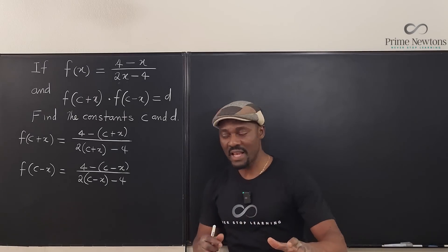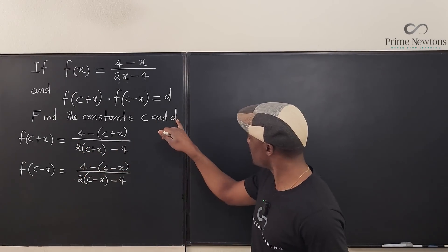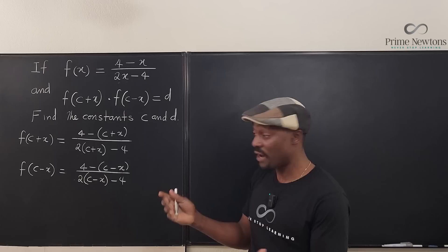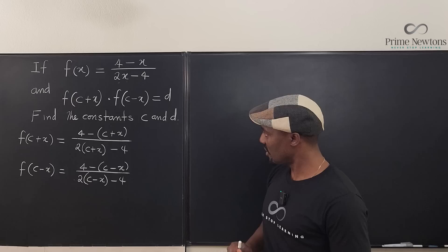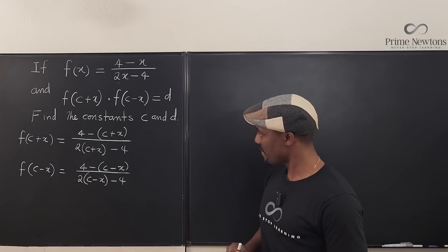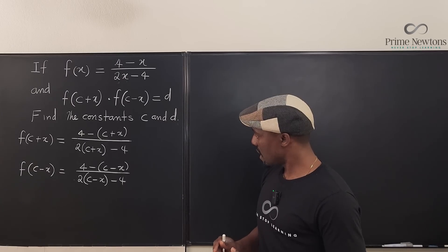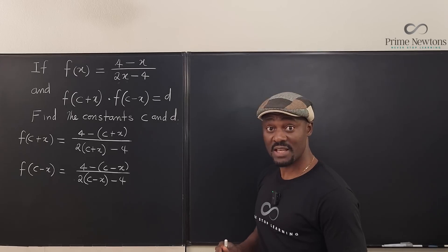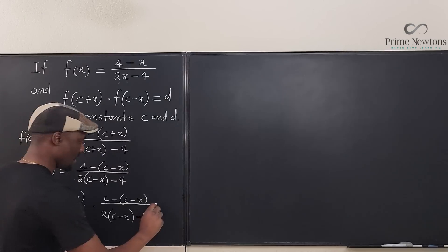The problem says the product of these two expressions equals the constant d. So let's try to multiply them together. It doesn't look like there's an easy shortcut, so it seems we just have to multiply everything out.